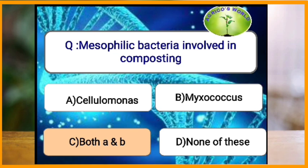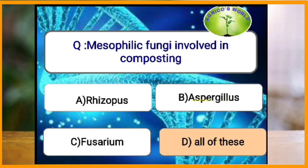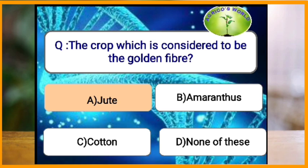Mesophilic fungi involved in composting: Rhizopus, Aspergillus, and Fusarium are all fungi involved in composting and are mesophilic in nature. The crop which is considered to be a golden fiber is jute. India occupies the first place in area and production of jute.